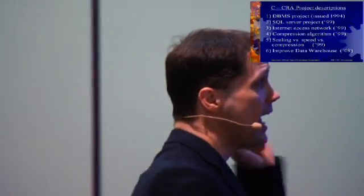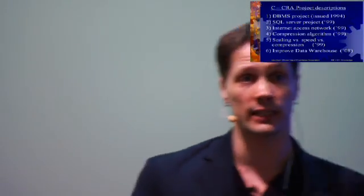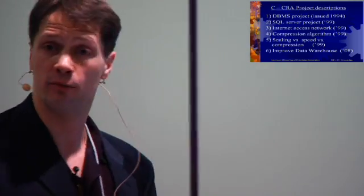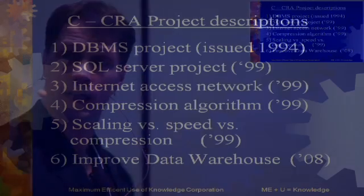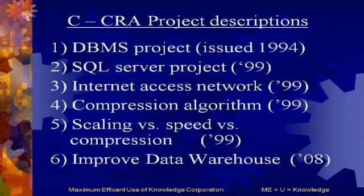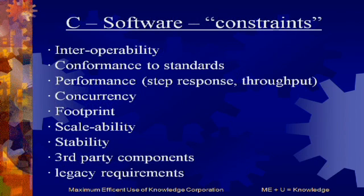Very recently, in November 2008, they released a new form with an example of how to complete it — that was an improvement of a data warehousing software project. So we have a nice series of projects we can use to illustrate to claimants what constitutes a technological advancement in the field of software and information technology, versus what is more of a business advancement.